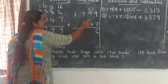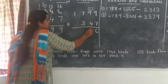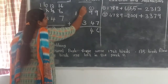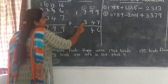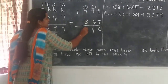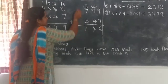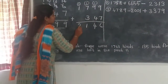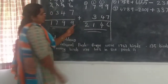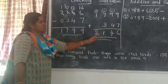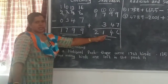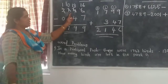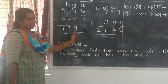Continuing the check: 1 plus 9 is 10, plus 4 is 14 — write 4, carry 1. Then 7 plus 3 is 10, plus 1 is 11 — write 1, carry 1. Finally 1 plus 1 is 2. We get the answer 2146, which is our original number. Our answer is correct. The subtraction result is confirmed as 1799.